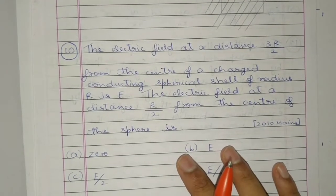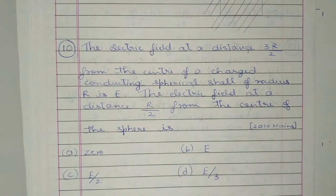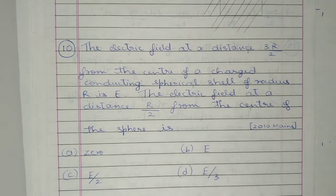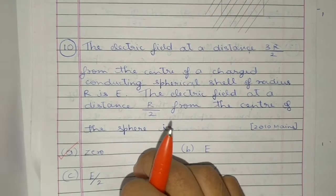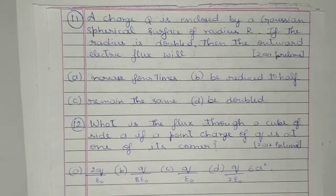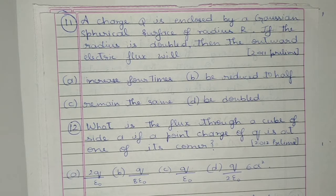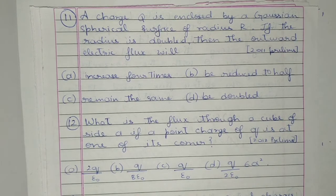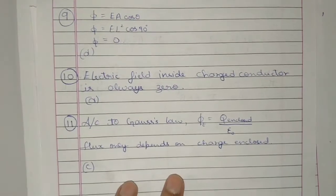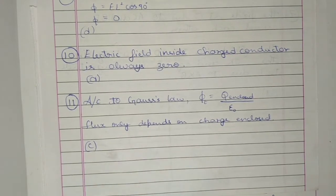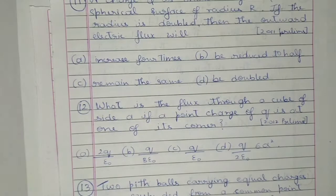Question 10: The electric field at a distance 3R/2 from the center of a charged conducting spherical shell of radius R is E. The electric field at a distance R/2 from the center of the sphere is — the electric field inside a charged conductor is always 0. Question 11: A charge Q is enclosed by a Gaussian spherical surface of radius R. If the radius is doubled, the outward electric flux will remain the same, because according to Gauss's law, flux equals charge enclosed divided by epsilon naught, and flux only depends on the enclosed charge.